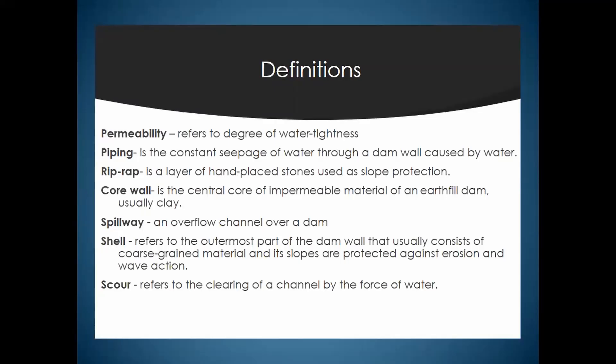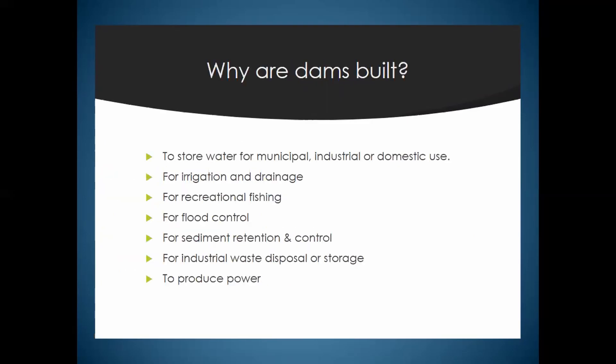There are a couple of definitions - there are more in your book but these are the important ones. Permeability; piping is the seepage of water through a dam wall caused by water pressure. Riprap is a layer of hand-placed stones used as slope protection. A core wall in the center which isn't permeable, a spillway which is basically your overflow, then a shell and a scour.